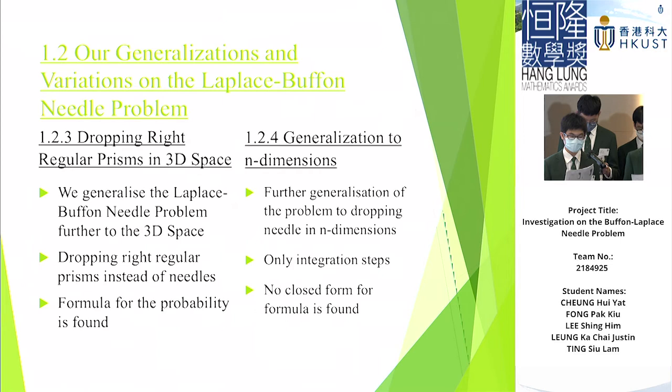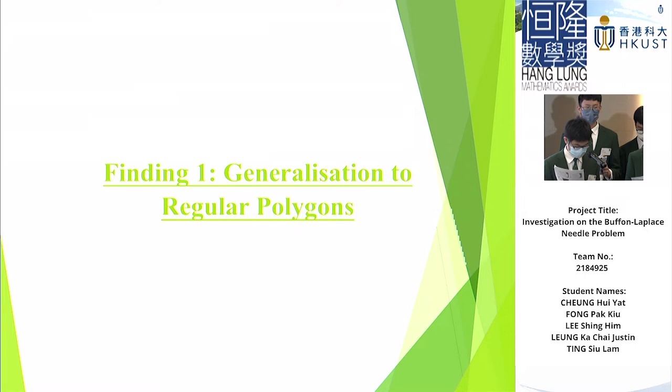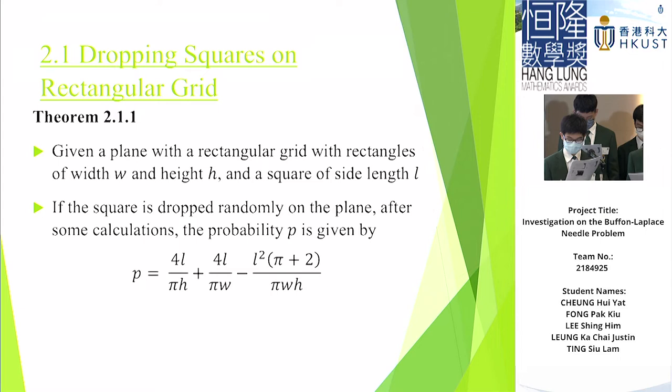So, in this presentation, I will mainly focus on Finding 1 and Finding 2. So, here's Finding 1. If a square is dropped randomly onto the grid, after some calculations, the probability is given by this formula.